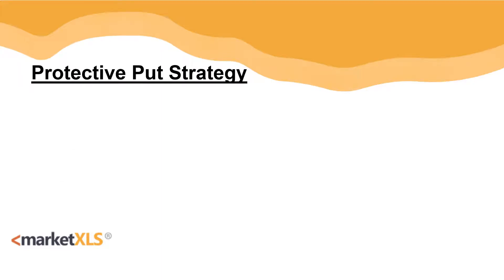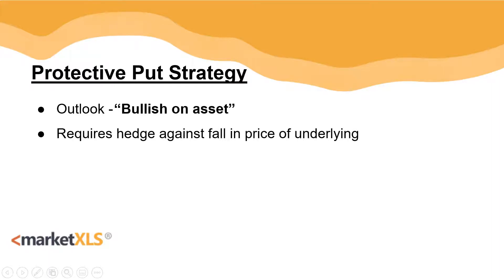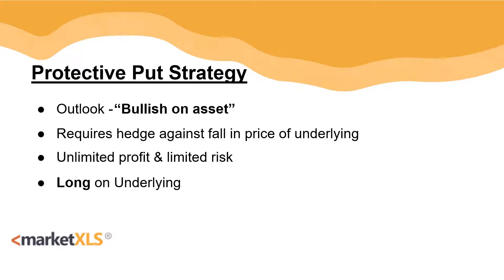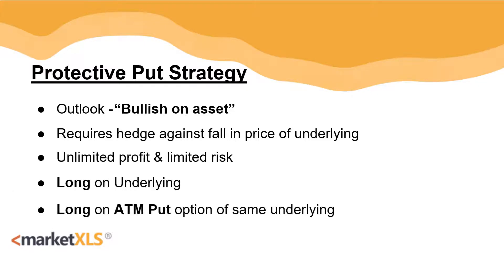This strategy is best implemented when your outlook on the stock is bullish in the near term and you are already long on the underlying stock. A protective put is an unlimited profit and limited risk strategy. What we do in this strategy is that we are long on the underlying stock and we go long on an at-the-money put option of the same underlying stock.